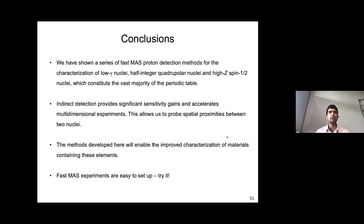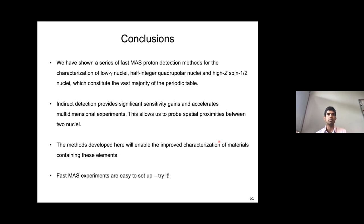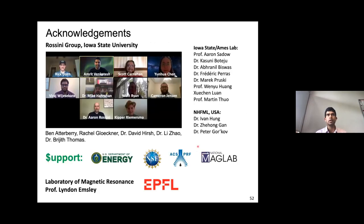To conclude: I have shown a series of fast-MAS proton detection methods for different classes of nuclei. In all cases, we have seen significant sensitivity gains. We can now perform multidimensional experiments with many of these exotic nuclei quite easily, and probe spatial proximities between nuclei in a variety of material samples. Fast MAS experiments are easy to set up — I encourage you all to try them, and feel free to reach out if you have any questions or need help. I would like to acknowledge Aaron's group and my supervisor Lyndon for giving me the chance to work with him as a postdoc at EPFL.